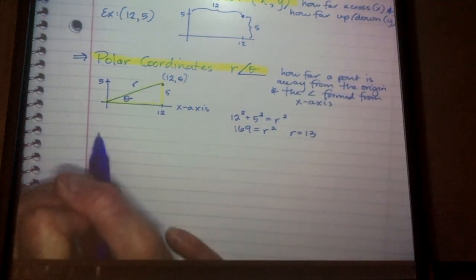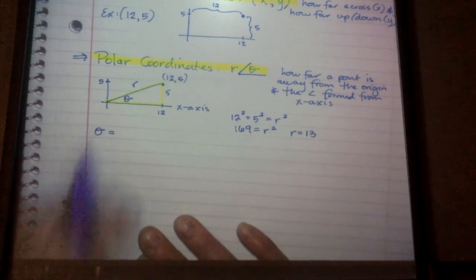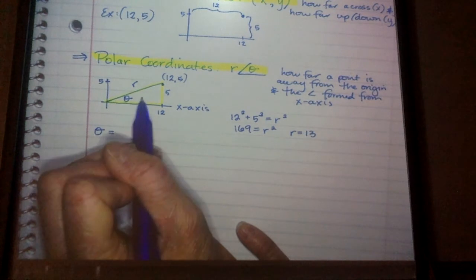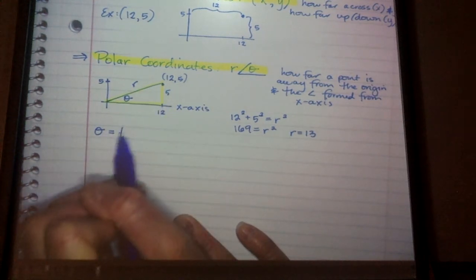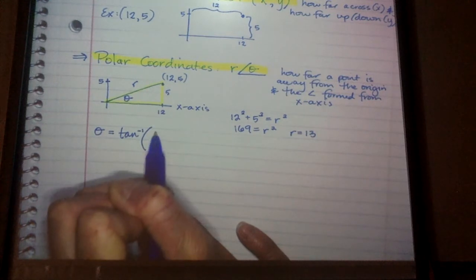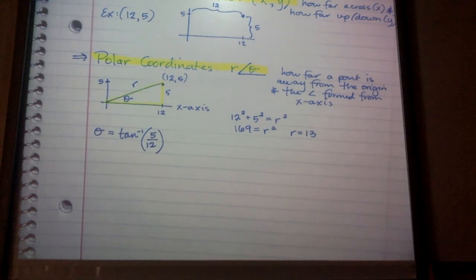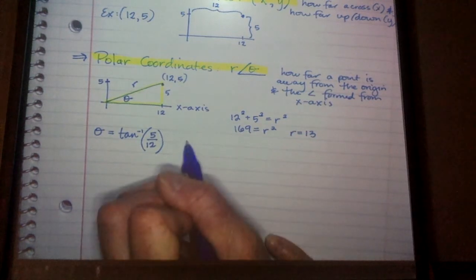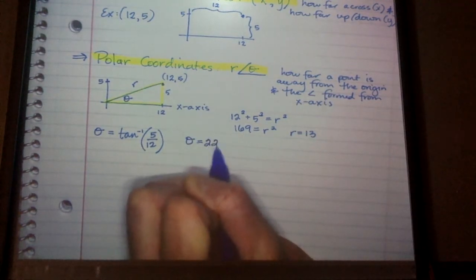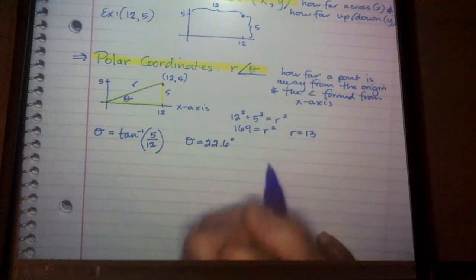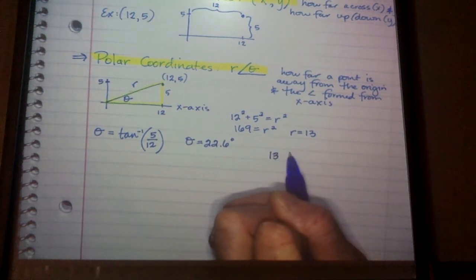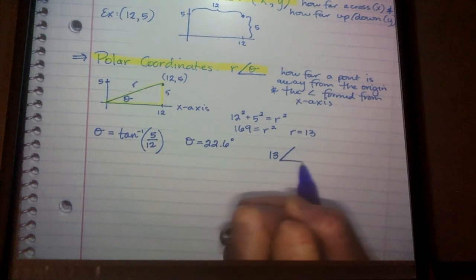Now to find theta, I'm going to use my inverse relationship. I know that I have the opposite and I have the adjacent. So tangent inverse — my opposite is 5, my adjacent is 12. So I would enter the tangent inverse of 5 divided by 12 into my calculator, and I got theta equals 22.6 degrees. So I would say this is R of 13, that's the distance from the origin, and the angle formed is 22.6 degrees.